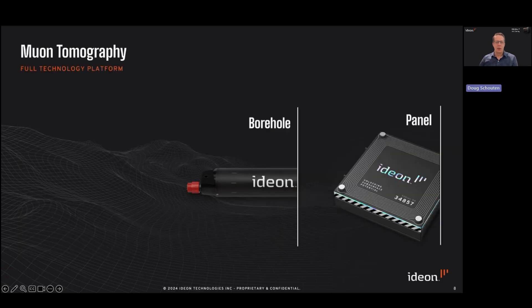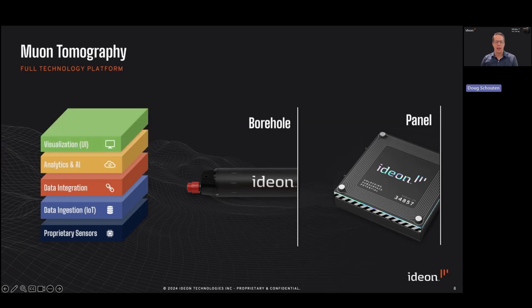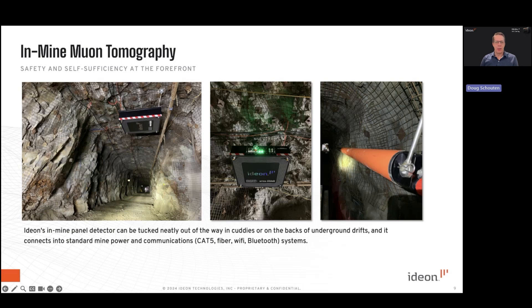Aideon delivers a full stack solution. We build proprietary sensors, we deploy them, we collect the data, analyze it, and then deliver visualizations and decision support to our customers. The muon detector platform is available in two form factors: borehole and in-mine panel detector form factors. We can hang the panel detector from the back of an underground drift, tucked out of the way of active mining operations. Similarly, we can deploy the borehole detector in in-mine scenarios where space is tight, placing it in the corners of underground drifts or cutties, connected to the mine network to provide continuous data access and updates on the evolution of a block cave.